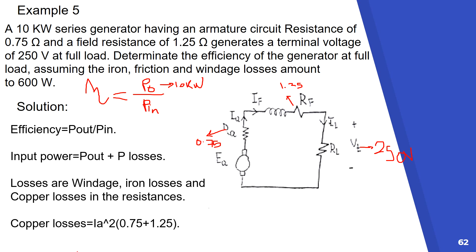The copper losses here are simply I squared multiplied by R_A plus R_F. This is the copper losses occurring in the generator.